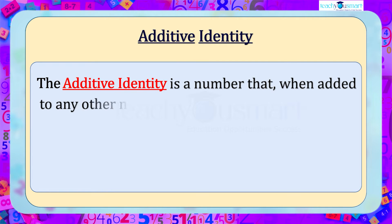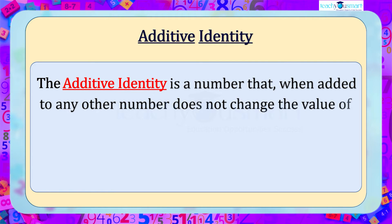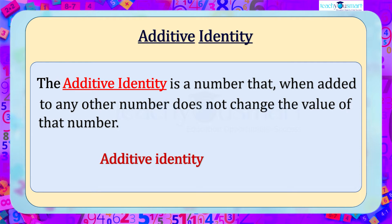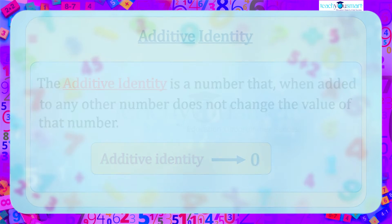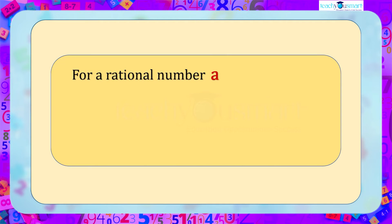So we call zero the additive identity for the given number. The additive identity is a number that when added to any other number does not change the value of that number. The additive identity is usually denoted by zero. In general, we can say that for a rational number a: a plus zero equals zero plus a equals a.